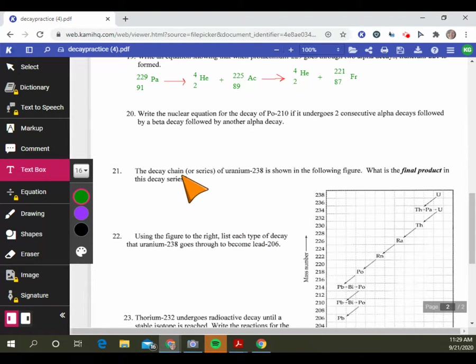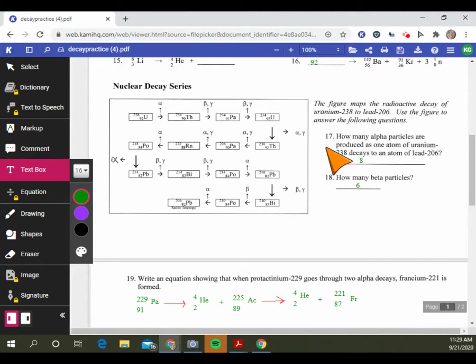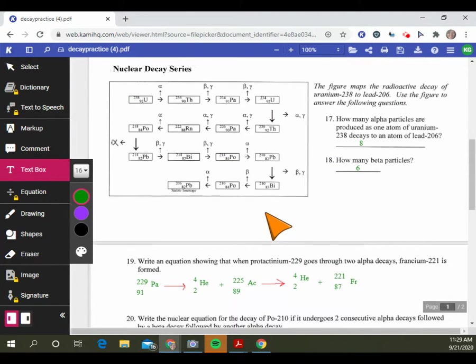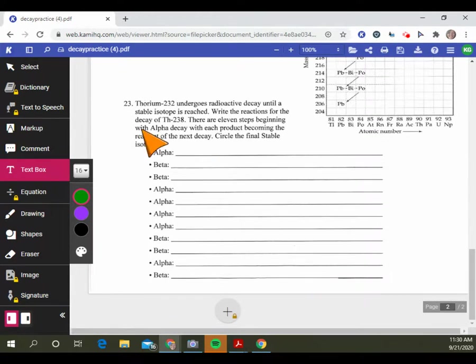Number 21, the decay chain or series of uranium-238 is shown in the figure. What is the final product in the decay series? Lead-206 is what you would end up saying. You're going to use this graph. Then number 23 is where you have to start. Thorium-232 undergoes radioactive decay until a stable isotope is reached. Write the reactions for the decay of thorium-238. There are 11 steps beginning with alpha decay.